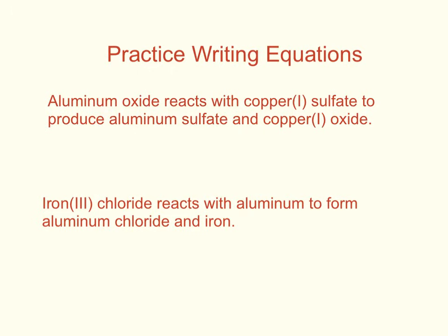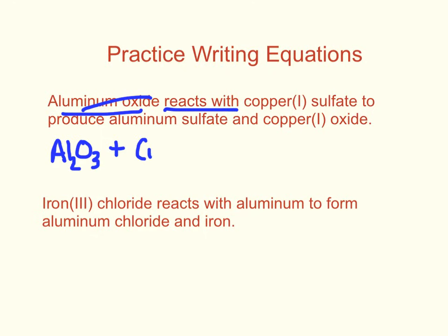If you don't know how to write formulas, you may want to go back and watch the video on binary ionic, binary molecular, and polyatomics. Now, aluminum oxide: aluminum is Al, oxygen is O, but check the charges — aluminum has a plus three, oxygen has a minus two, they don't cancel, so criss-cross to get Al₂O₃. Reacts with copper(I) sulfate: copper is Cu, sulfate is SO₄ with a minus two charge, copper has a plus one, so criss-cross to get Cu₂SO₄. No parentheses needed.